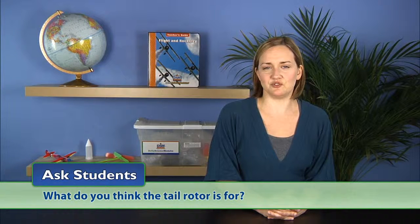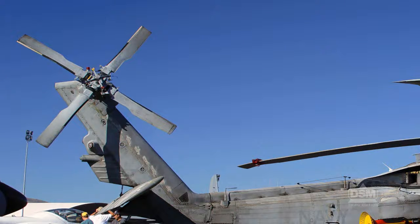Then, point out the diagram of the helicopter at the top of Part A of their activity sheets and ask students, What do you think the tail rotor is for? Students may suggest that, like an airplane tail, the tail rotor stabilizes the helicopter in flight and helps it turn. Explain that the tail rotor keeps the helicopter body from spinning in the opposite direction as the main rotor spins, and the tail rotor helps the main rotor execute turns.